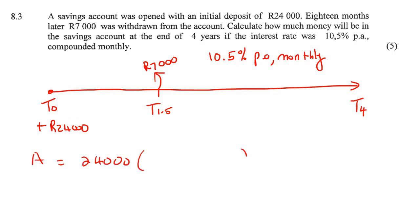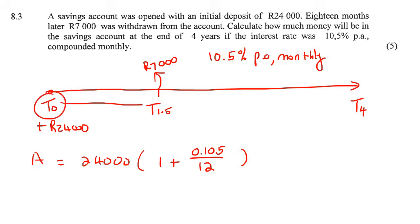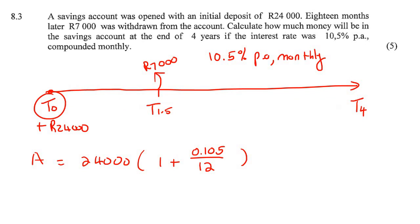We use the normal formula: 24,000 times (1 + 0.105/12). The interest rate is 10.5%, which is 0.105, compounded monthly. We take it from T0 all the way to T4 — that's four years, so the exponent is 48, or 4 times 12.